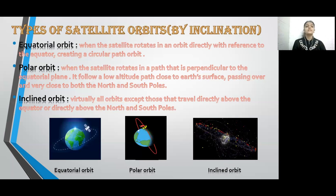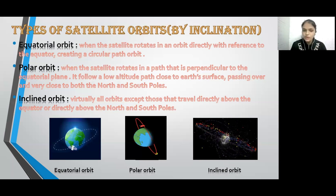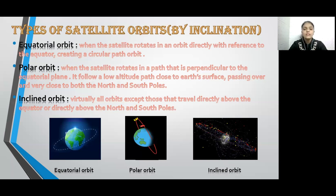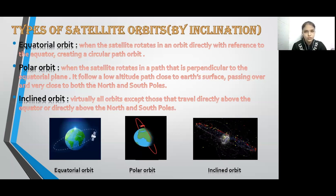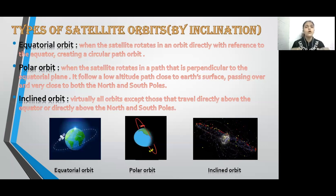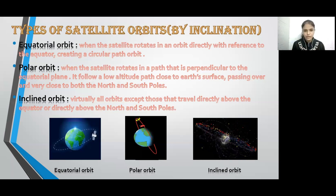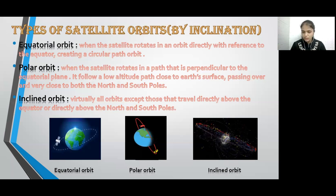Next is the polar orbit — here the satellite creates a perpendicular, that is a 90-degree angle, towards the equator, and they are more likely to be close to the north and south poles. As you can see in the visual, there is a vertical orbit shown with reference to the equator. Next are inclined orbits — these are all orbits which don't create a horizontal or vertical motion. As you can see in the visual, there are numerous satellite orbits with no fixed reference.